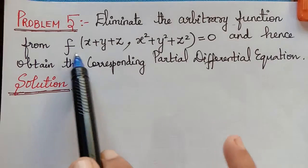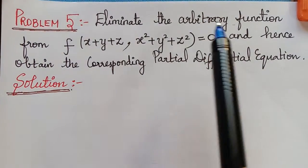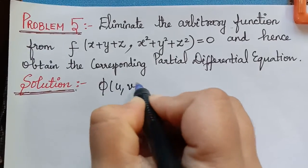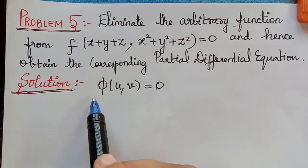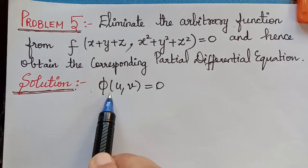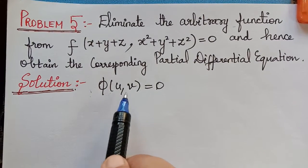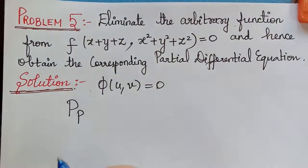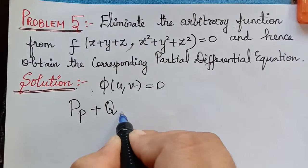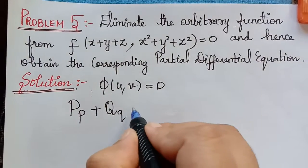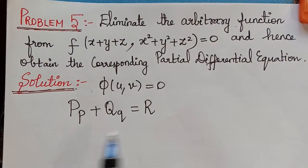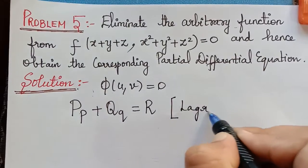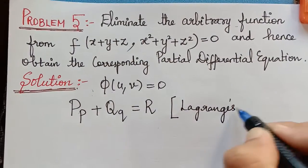The solution is given in the form φ(u, v) = 0. Whenever the solution is in this form, the partial differential equation will be of the form capital P multiplied with small p plus capital Q multiplied with small q equals capital R, and this form is known as the Lagrange's type of equation.